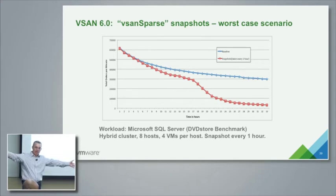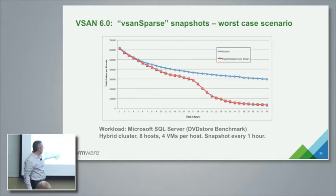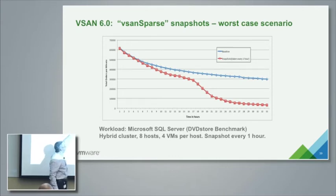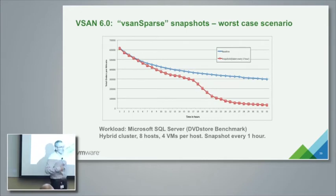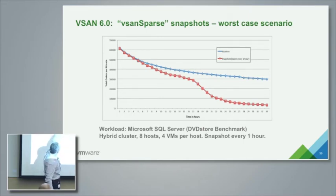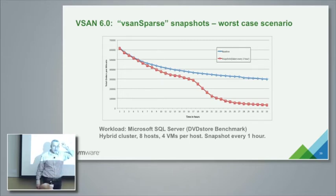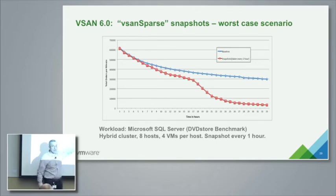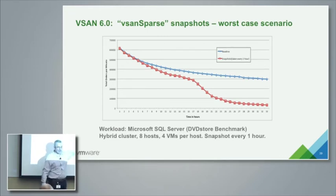There are some worst-case examples, and here is the worst case: a database — a Microsoft SQL Server DVD Store workload. The workload performance goes down naturally as the database grows, even on physical hardware. As we take snapshots, up to about 16 snapshots we see very small degradation — about 1 to 1.5% for each snapshot taken.